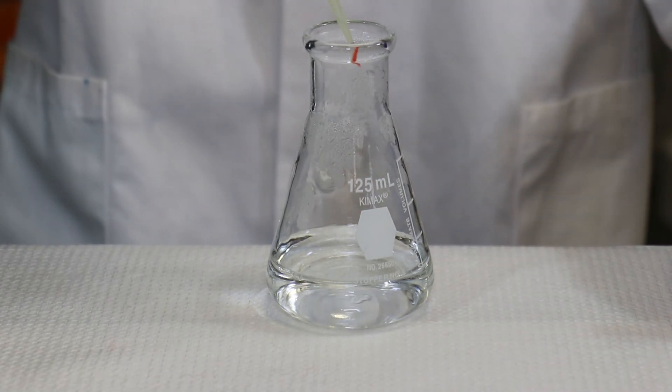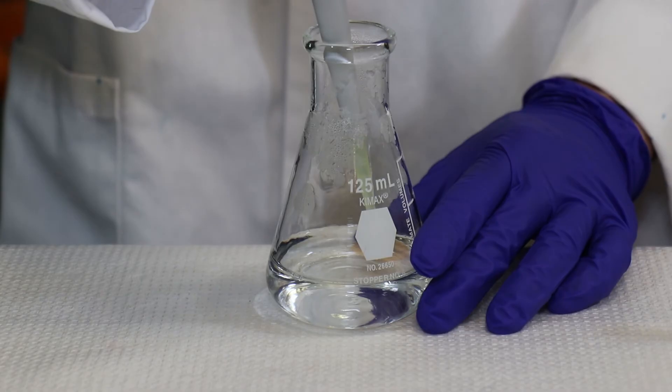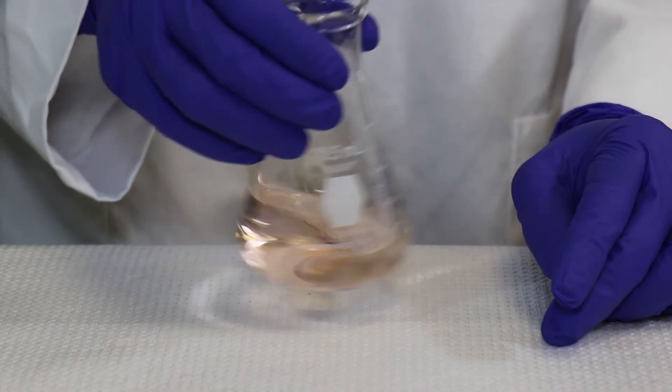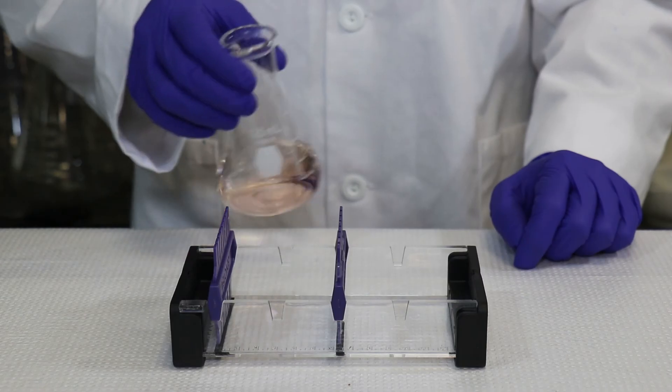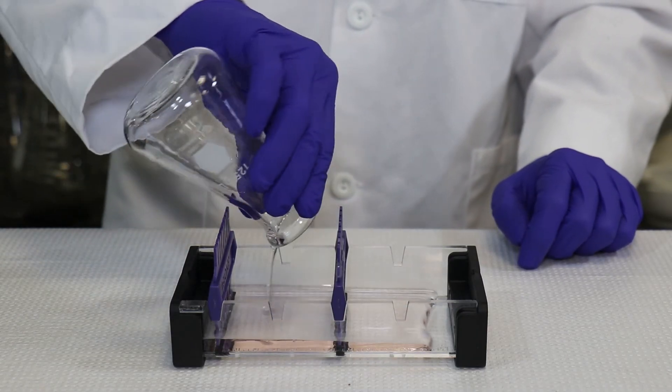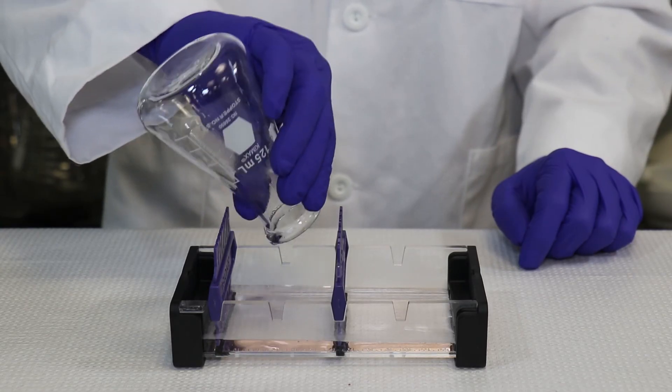Step 5: Before casting the gel, add 25 microliters of diluted CyberSafe to the cooled molten agarose and swirl the flask to mix. Step 6: Pour the cooled agarose solution into the prepared gel casting tray. The gel should thoroughly solidify within 20 minutes.